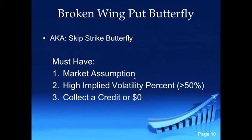Some of the advantages of the broken wing butterfly: you can collect a credit or do it for free, and the stock can rally and you can still make money. Don't ever do this for a debit because the risks then outweigh the reward. We have to have a market assumption, and that assumption has to be neutral. If you are bearish on this underlying, do not put this on. It is a put and it seems like it should want to go down, but we do not want this to go down. We only want it to go up, and we must have implied volatility percent above 50.